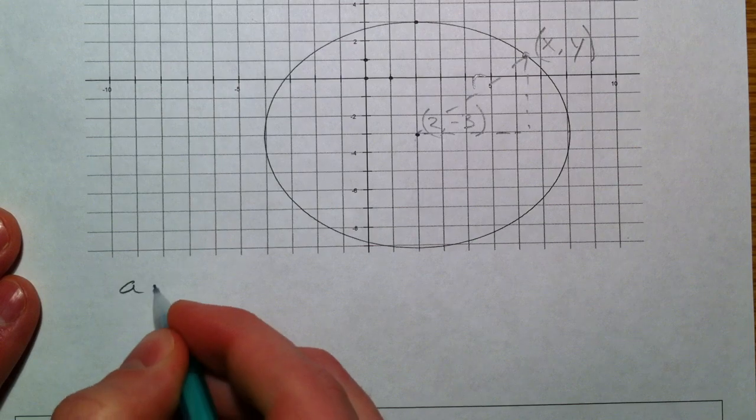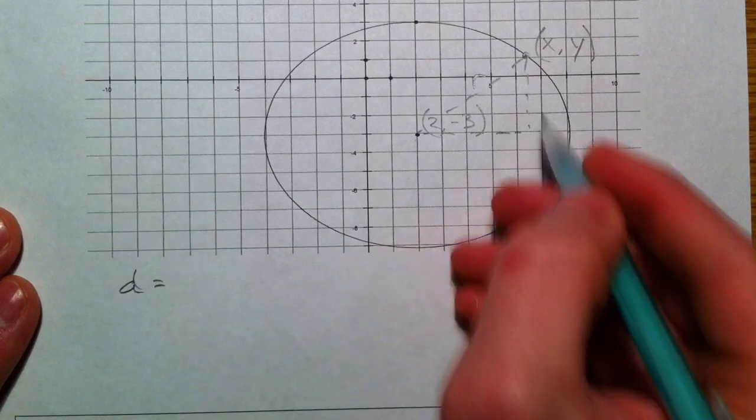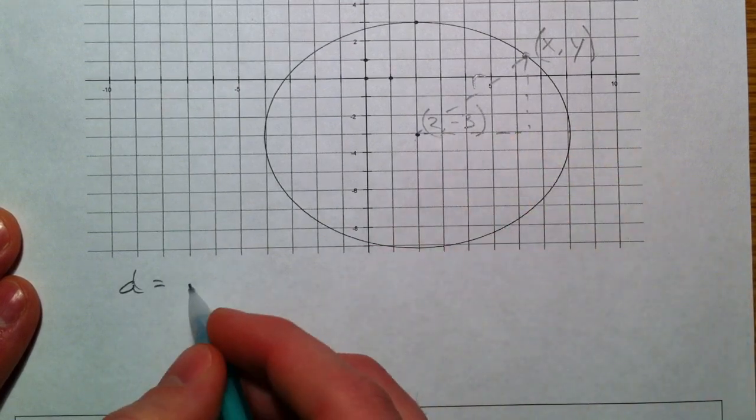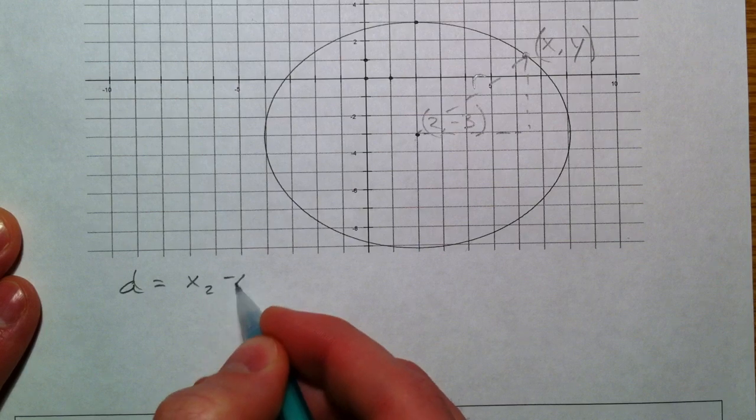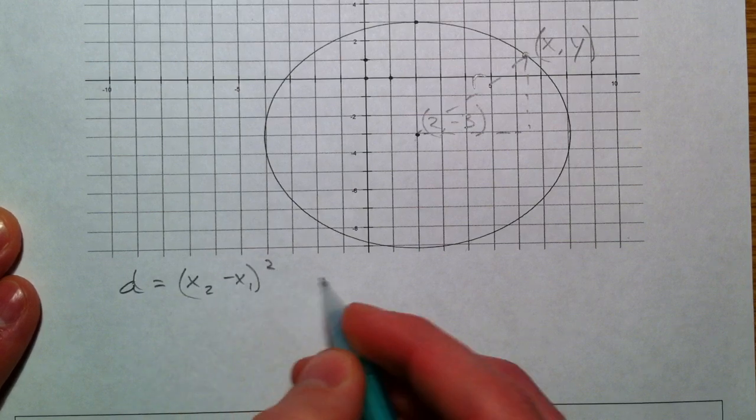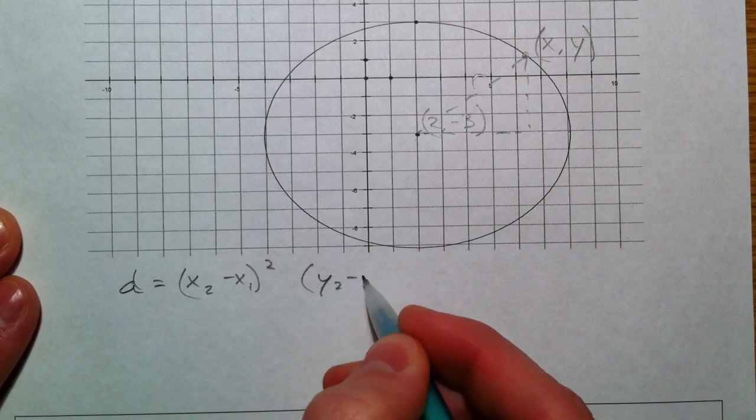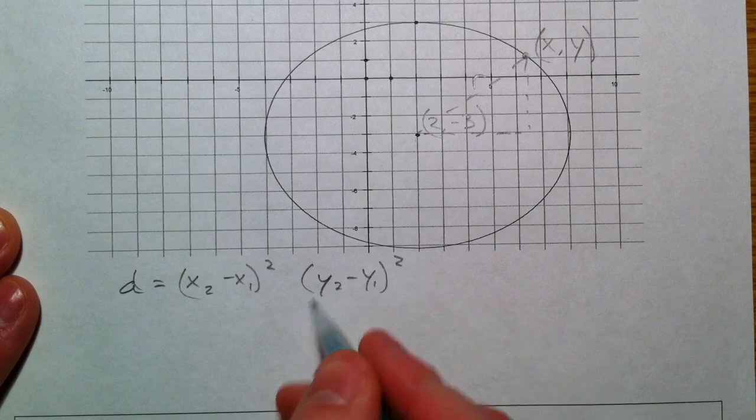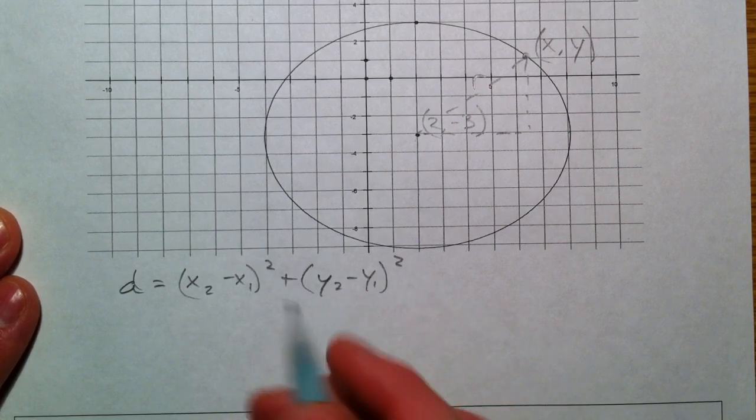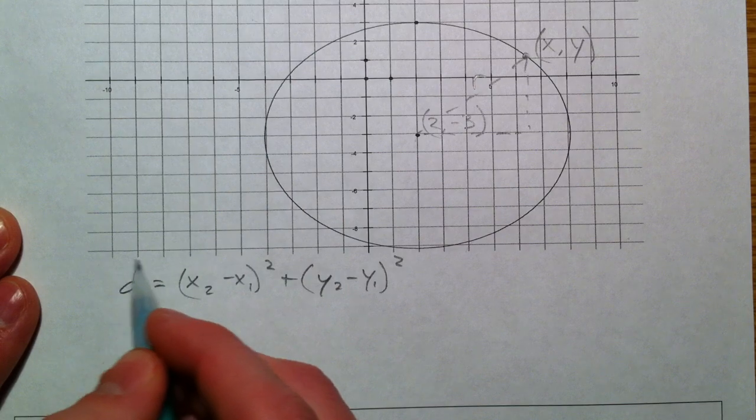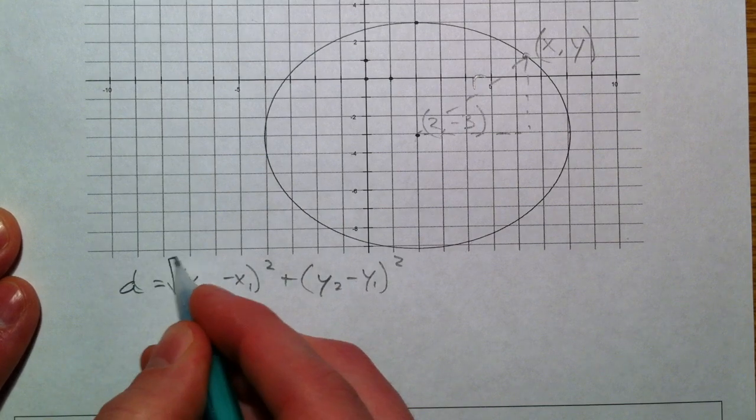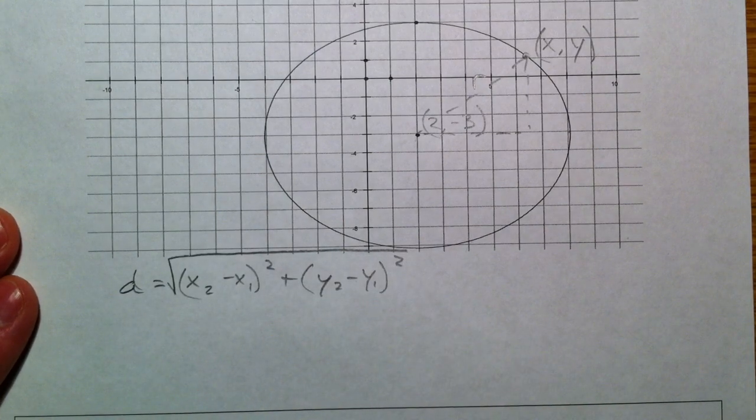And so, we know the distance formula is the difference between the x's, x2 minus x1 squared, and the difference between the y's, y2 minus y1 squared, added together. a squared plus b squared equals d squared. But then we take the square root of all sides. And so, this is what the distance formula looks like.